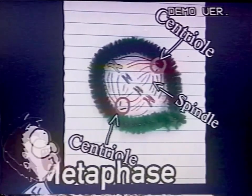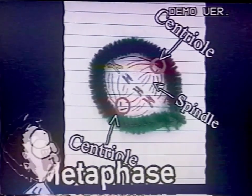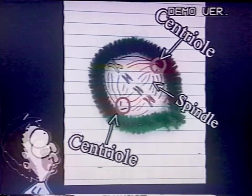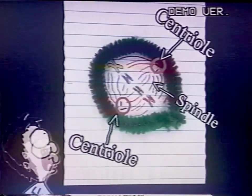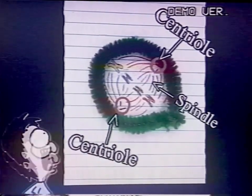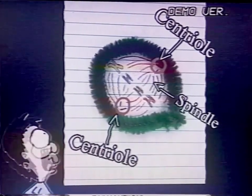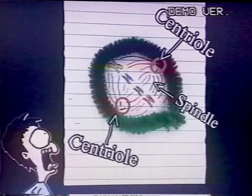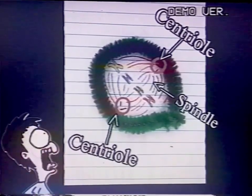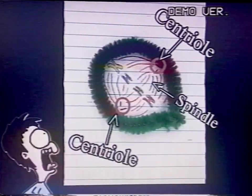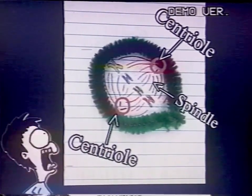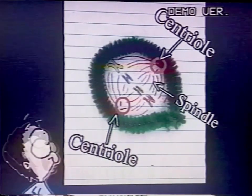Next up is metaphase. During metaphase, the chromosomes line up towards the center of the cell. Then each chromosome is connected to a spindle fiber at its centromere.